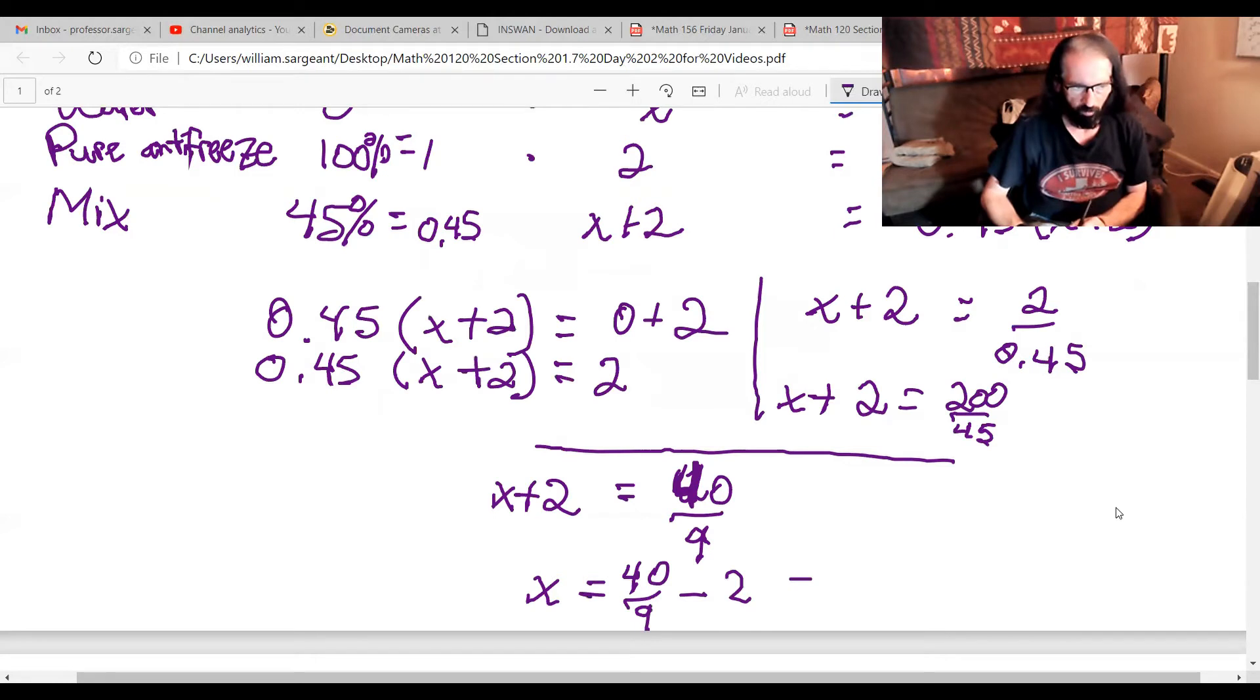And if I get a common denominator of 9, multiply the top and bottom of 2 by 9 to get 18 over 9. Finally we've got 22 ninths.